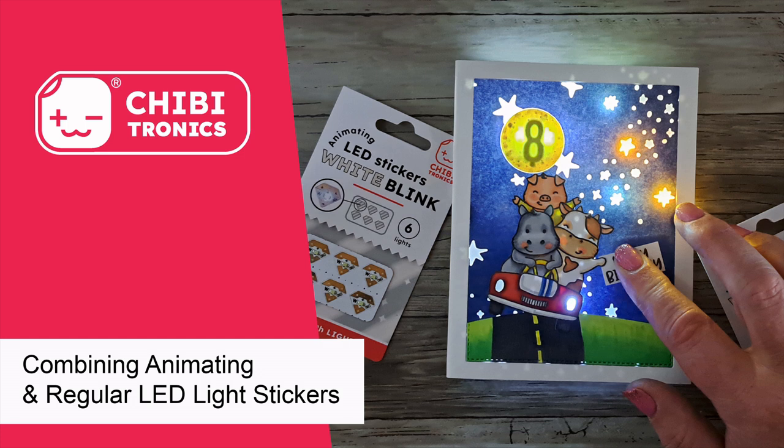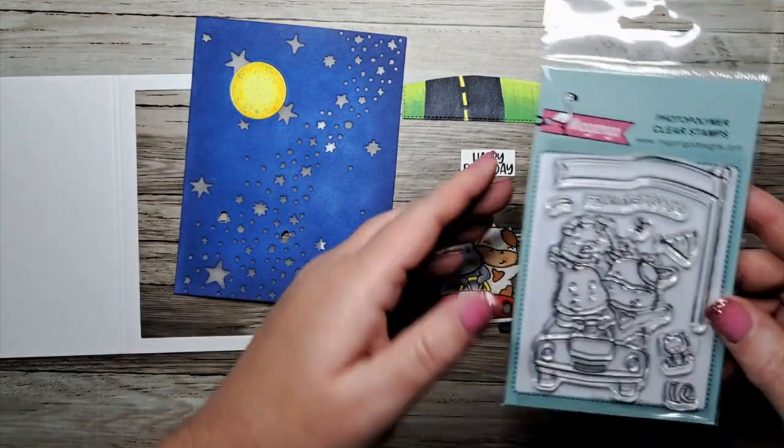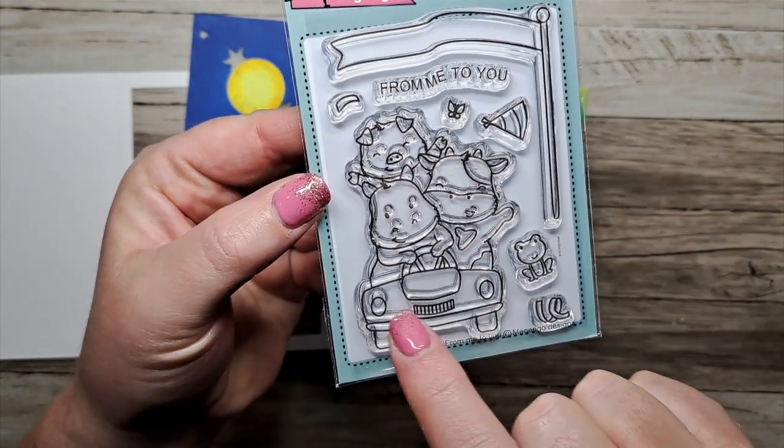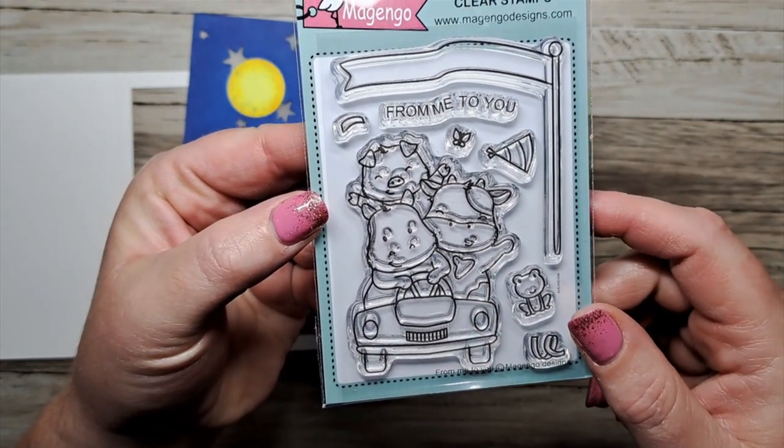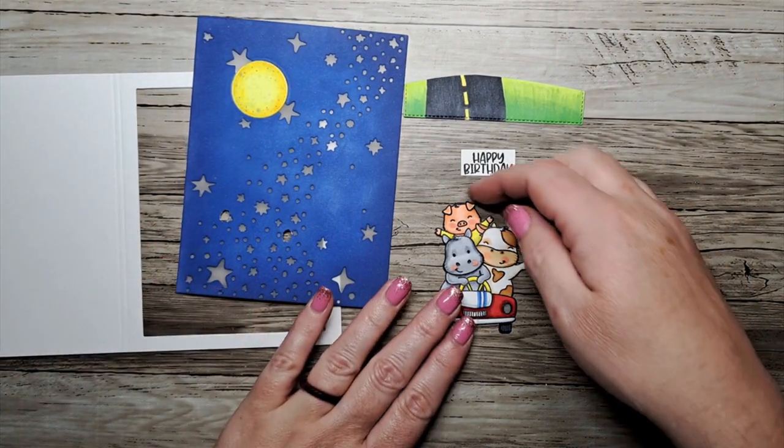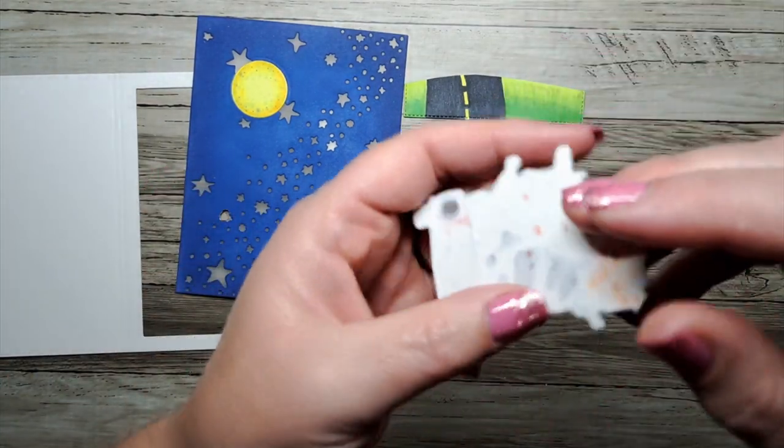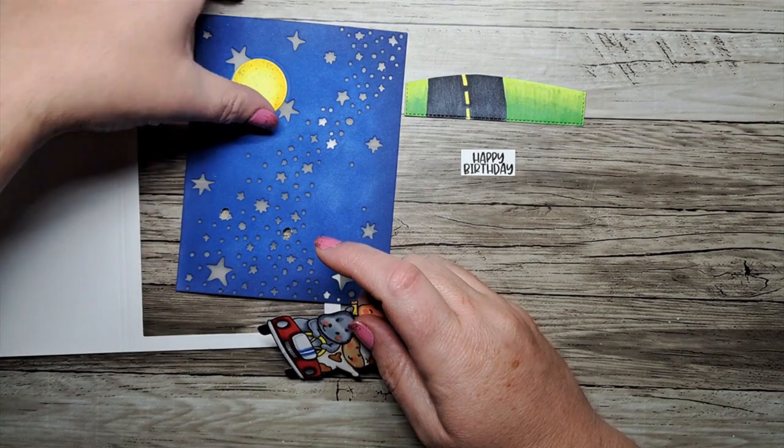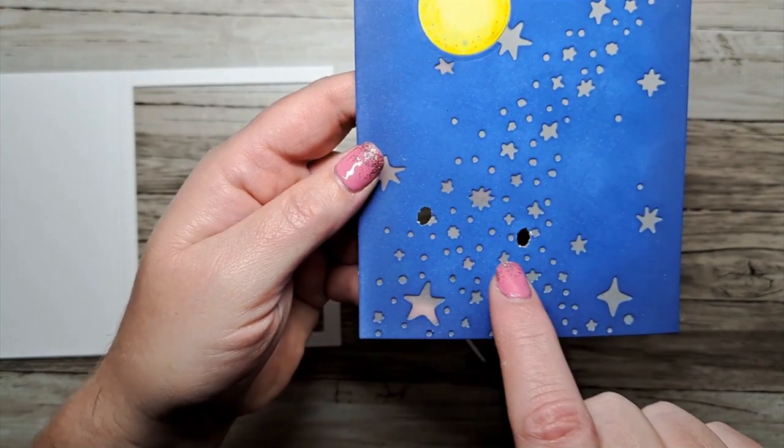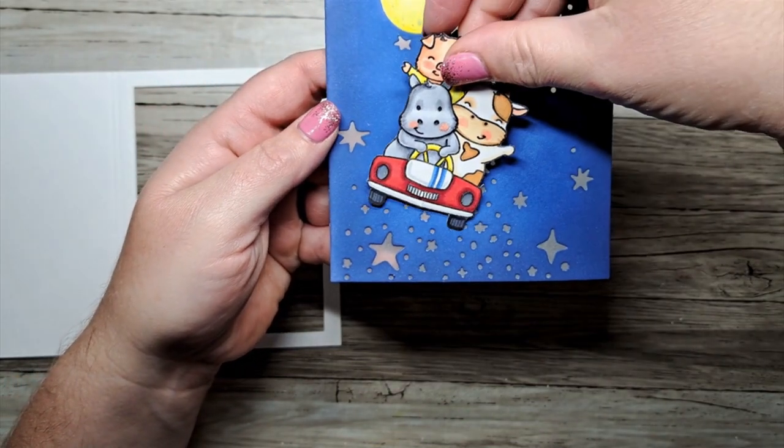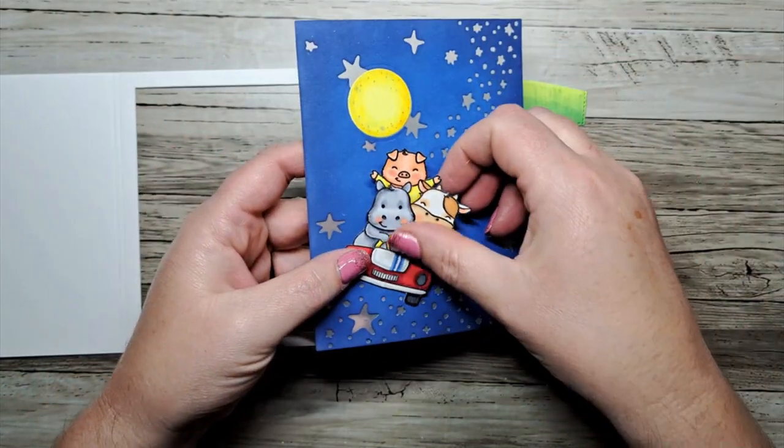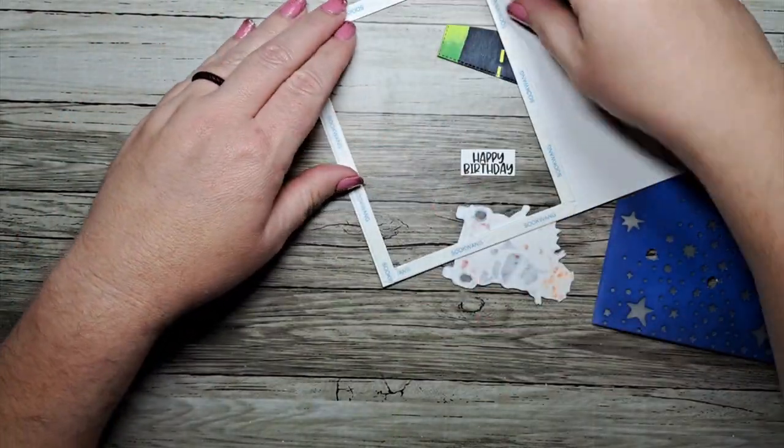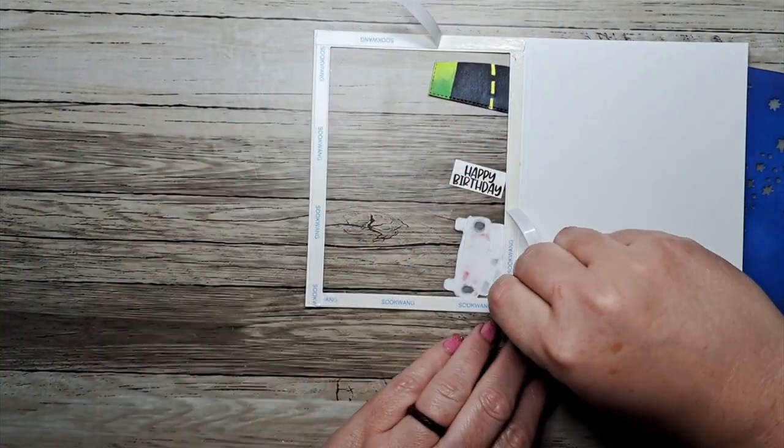I have already began creating my card base. We're going to be using this cute Menjango clear stamp set called From Me To You and we're going to light up those cute little headlights on the car. I've already created our cutie patooties and I've backed open areas of the headlights with some vellum. I've also kind of figured out the position of my car on our background and I've cut circles for the headlights already.